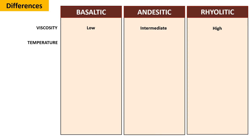Regarding temperature, basaltic magma has the highest temperature, ranging from 1000°C to 1200°C. Acidic magma has a lower temperature than basaltic but higher than rhyolitic, ranging from 900°C to 1000°C. Rhyolitic magma has the lowest temperature, ranging from 750°C to 900°C.